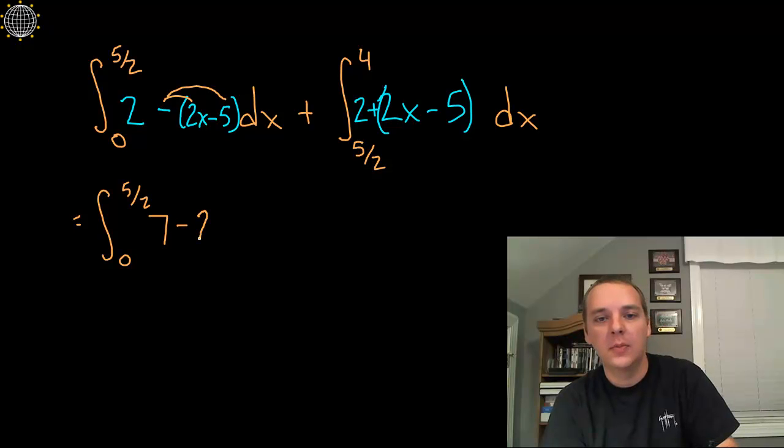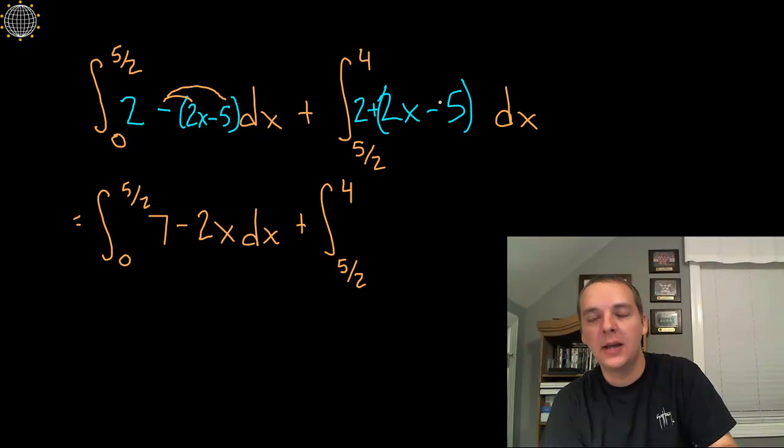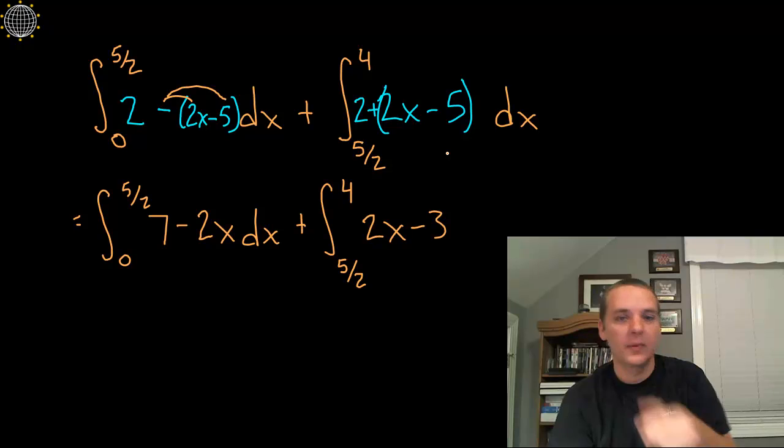And then the integral from 5 halves up to 4 of 2 plus 2x minus 5. So we get 2x minus 3, that's from 2 minus 5, dx.